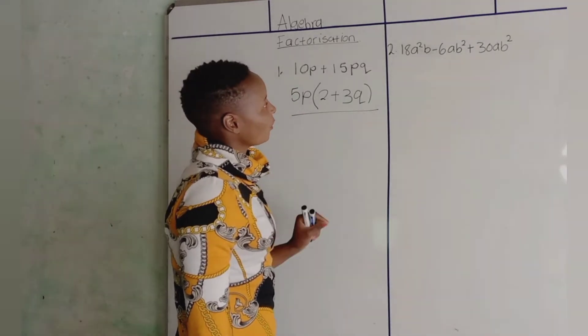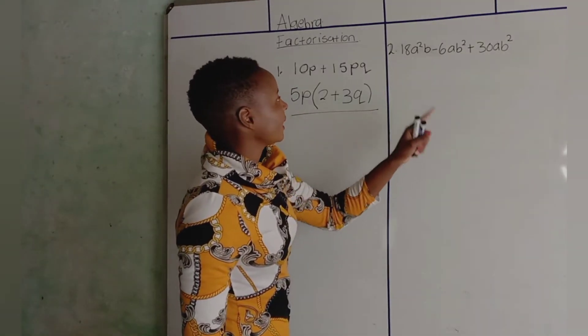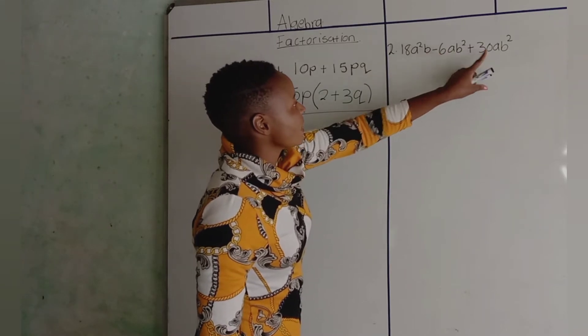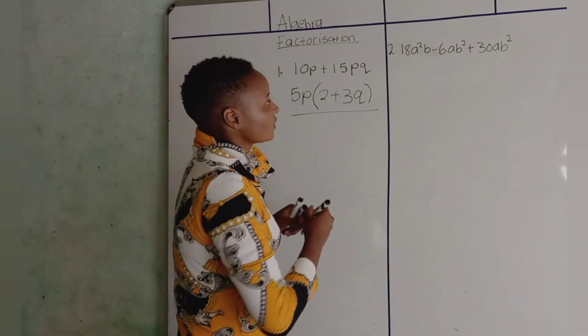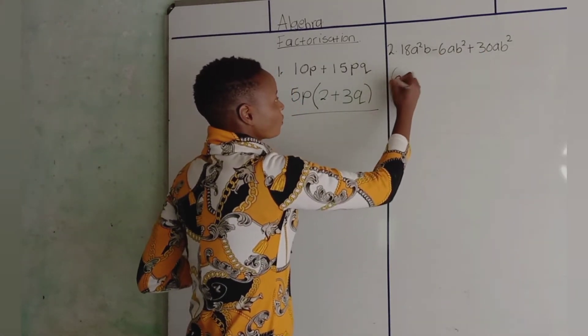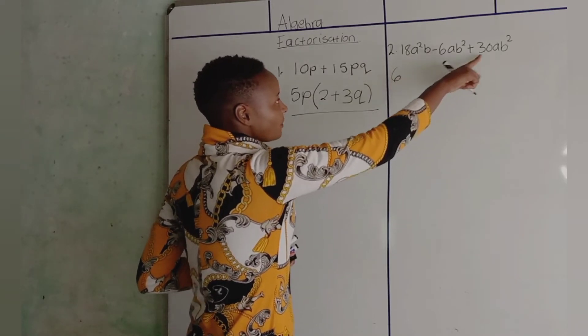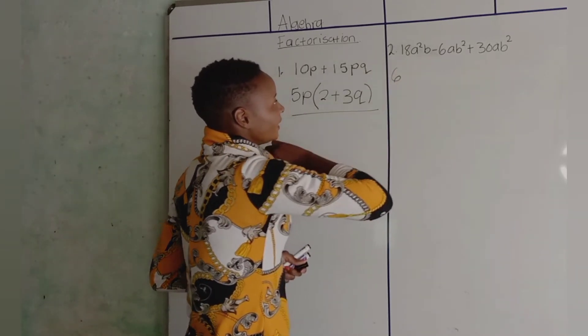Let's look at what's common. 18, 6, and 3. So with the numbers: 6 can enter 18, 6 can enter 30, 3.